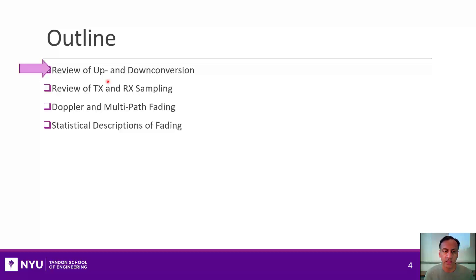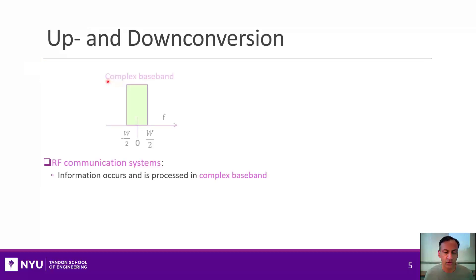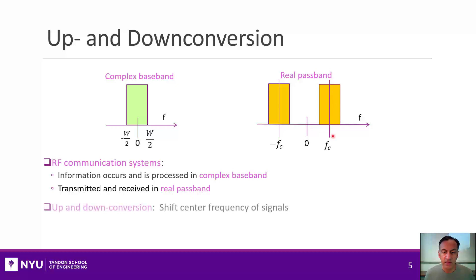The first thing I need to review is just the basics of up and down conversion. So recall that whenever you have an RF communication system, usually the information is processed in what's called complex baseband. That means in frequency it's centered around zero and has some bandwidth W. But of course, the real signal that's actually transmitted over the wireless channel from the antenna is a real valued signal in passband, meaning it's centered around some carrier frequency Fc. And up and down conversion really is just a process from going from complex baseband to real passband and back. And it's often also just called mixing.